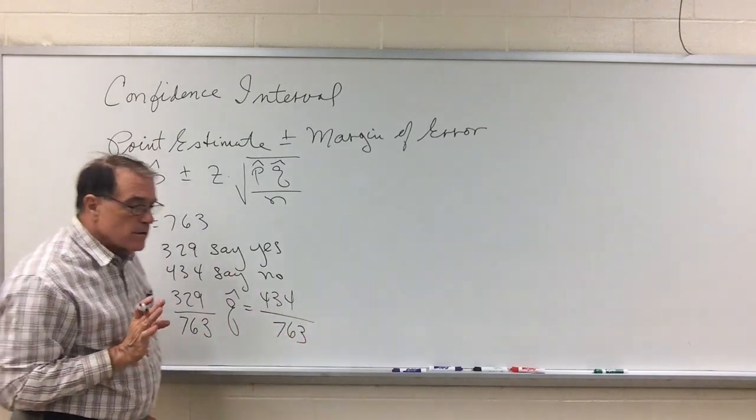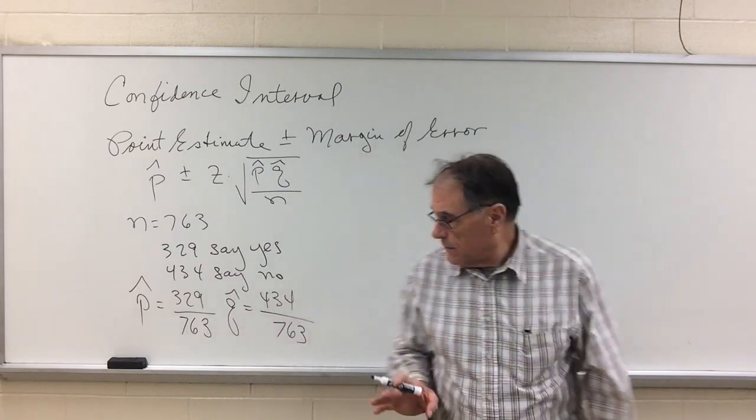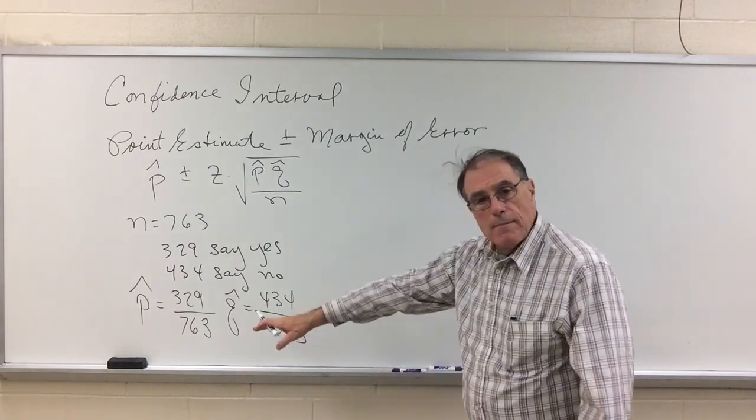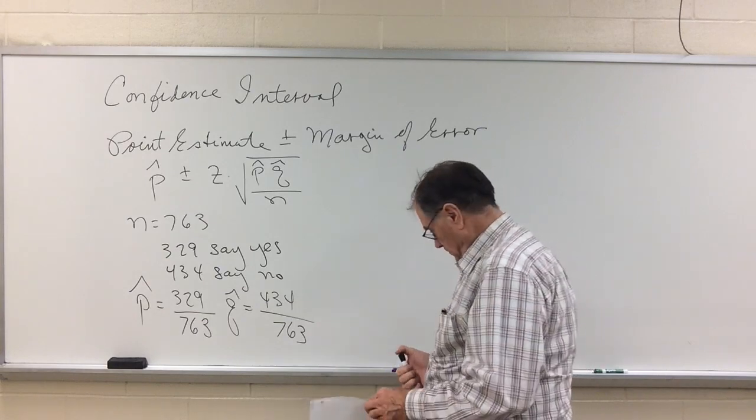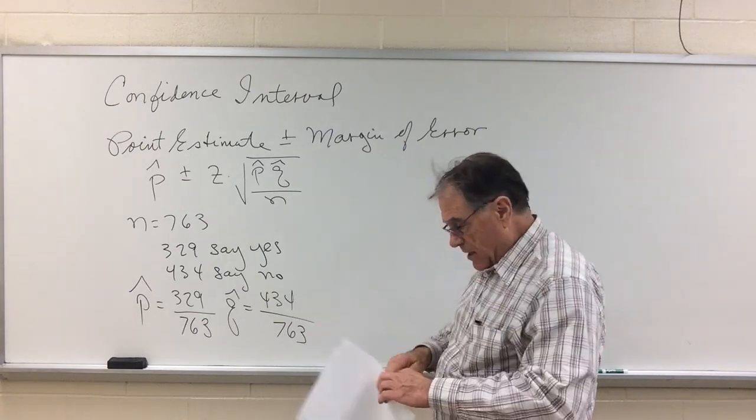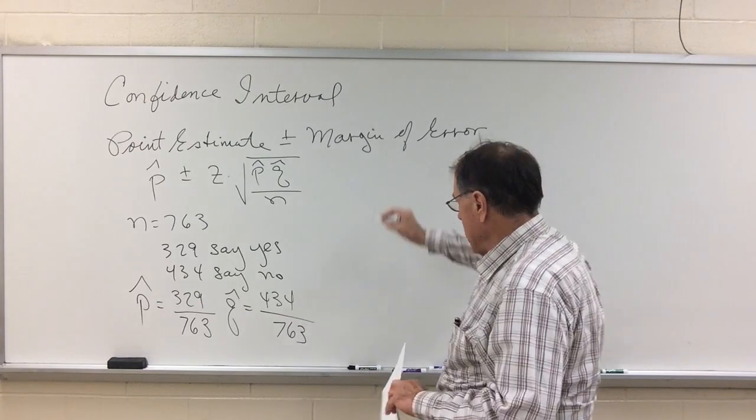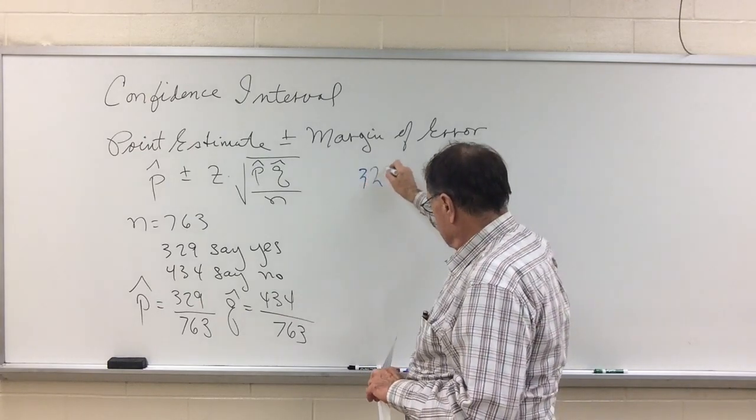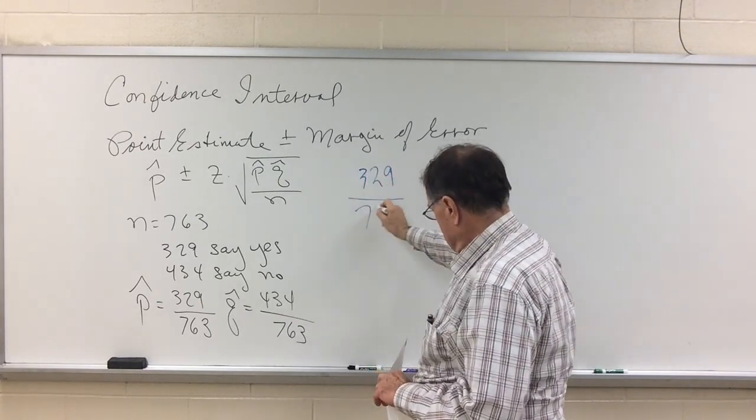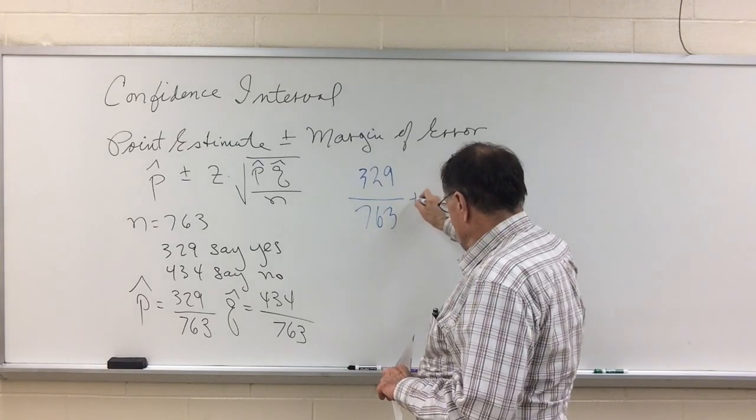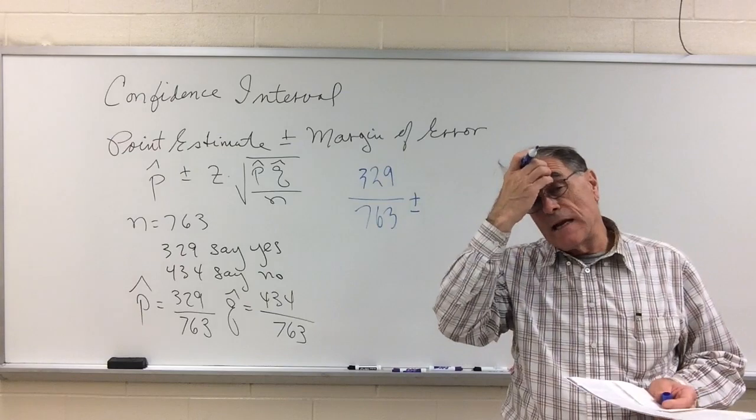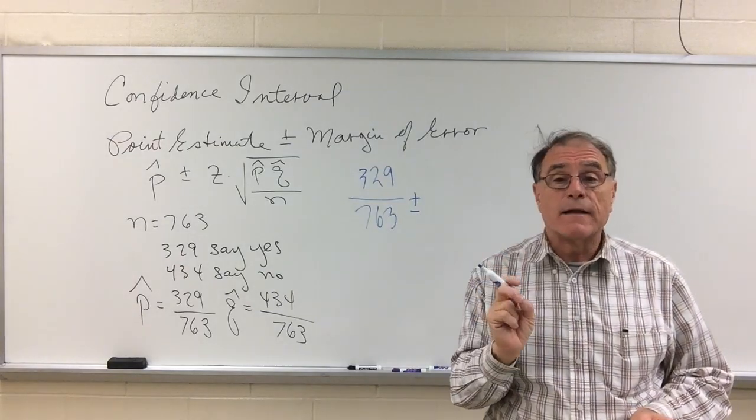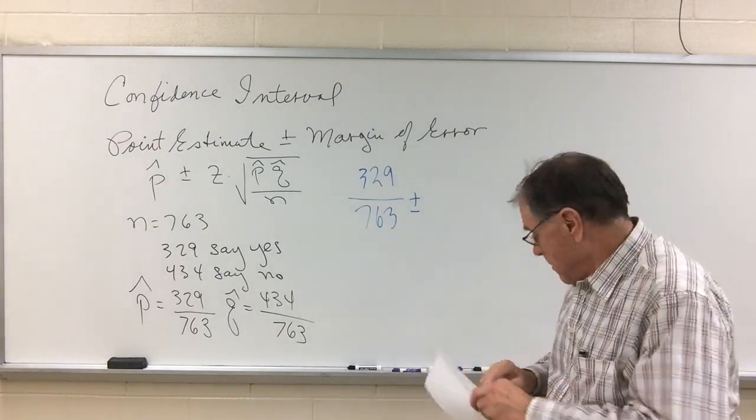So now to set up this confidence interval I'm going to take my point estimate 329 out of 763, that's my point estimate, plus or minus my z-score. Now let's suppose we would like to do a 92% confidence interval. Now let me remind you...